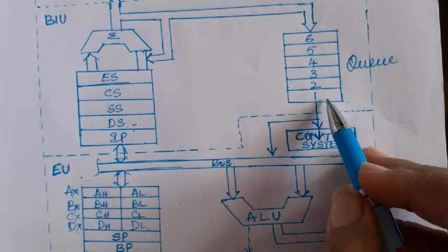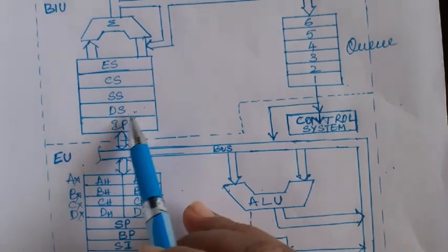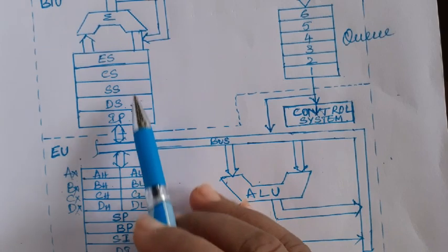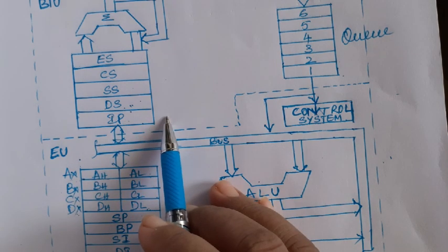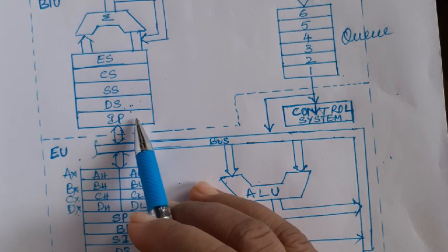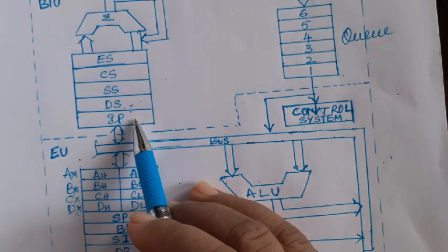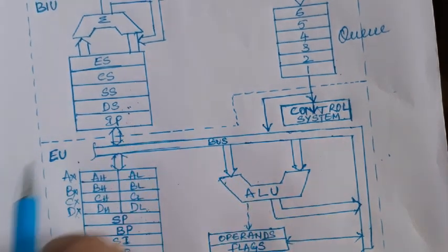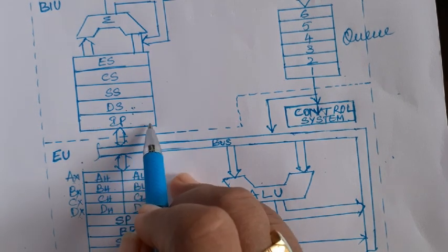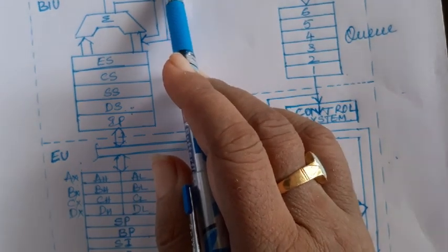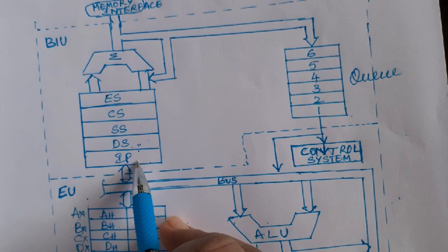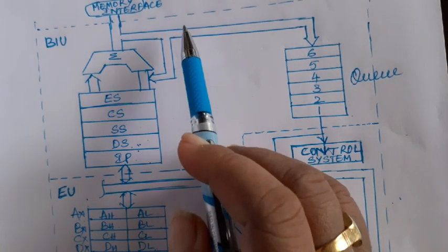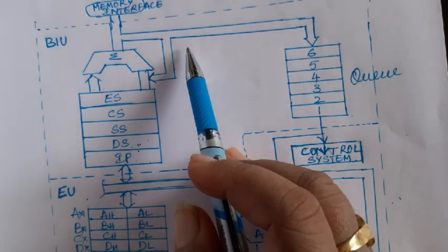With the idea that at least one instruction must be pre-fetched, this instruction queue is made of six bytes. In the BIU we have six 16-bit registers — four of them are segment registers and one is the Instruction Pointer, which is 16-bit. The Instruction Pointer always holds the address of the next instruction to be fetched. However, to fetch the next instruction it has a 16-bit address, but the 8086 address bus is 20 bits.